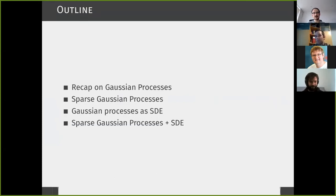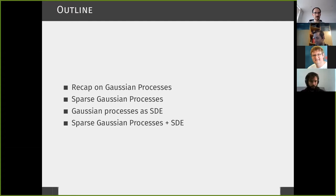As a short outline, I'll talk a bit about Gaussian processes, then about SPAS GPs and motivate thinking differently about inference and optimization. Then I'll talk about Markovian Gaussian processes, which can be seen as an SDE — given as an equivalent SDE representation — and how you can merge the SPAS approach with this SDE formulation.